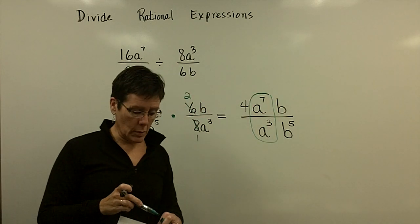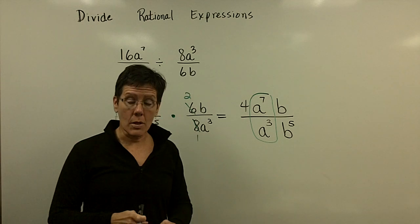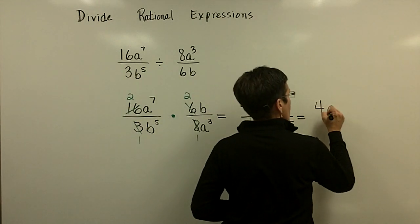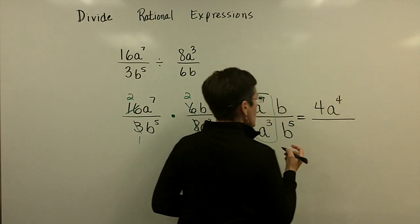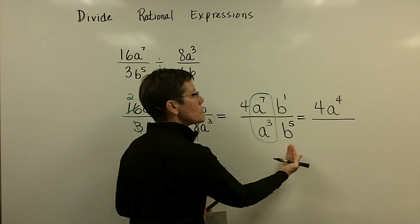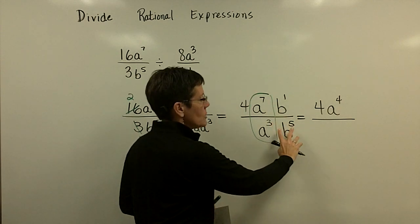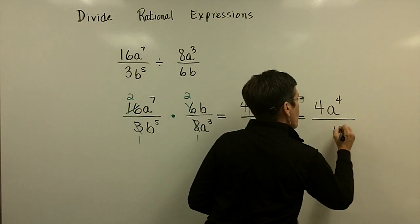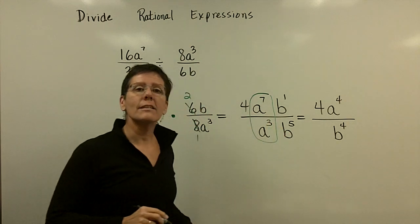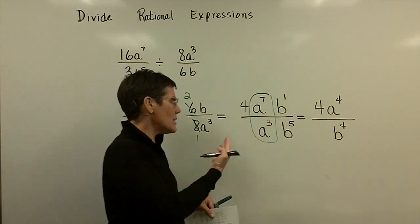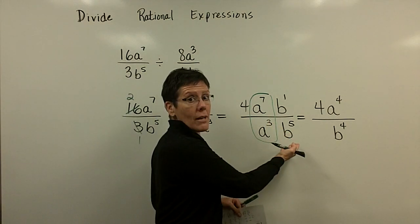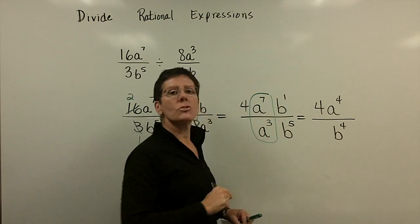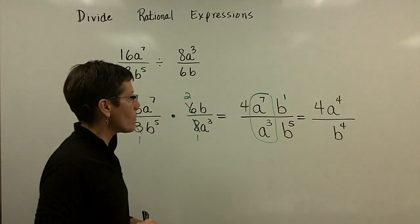Notice you can subtract those exponents when you divide because the bases are alike, giving a to the fourth upstairs. For the b terms, you can subtract in reverse order — five minus one is four — so the result is downstairs. Picture writing b five times with only one b on top: you remove one, leaving four b's, or b to the fourth.